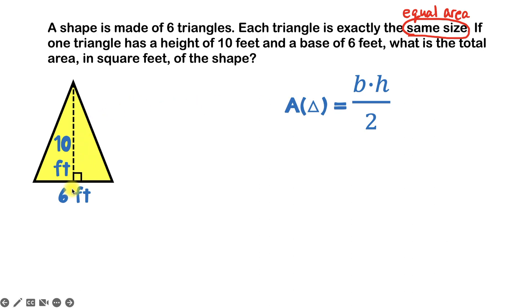So we have the base of this triangle, which is six feet. So wherever I see the B, I'm going to put six. So right next to this, I'll write the equal sign. My base is six feet, so I'll write that here, times my height, which is 10 feet, so I'll put 10 feet here.